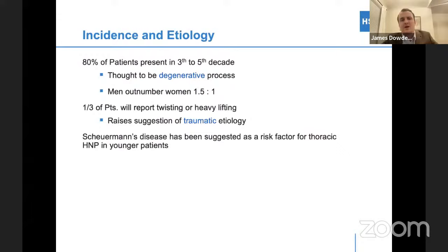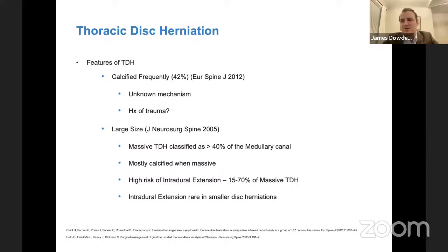Most patients present in the third to fifth decade of life. It's thought to be a degenerative process. Men slightly outnumber women, but there's really no true gender bias, and there's potentially a traumatic etiology but we don't really know. The important thing about thoracic disc herniation is it has features different than other types: they're frequently calcified around 42% of the time and can have very large size. A massive thoracic herniation is classified as having more than 40% of the medullary canal. When they're massive, they're mostly calcified, and they have a high risk of intradural extension — up to 15% of the time. Be on the lookout for that in cases of large disc herniations.